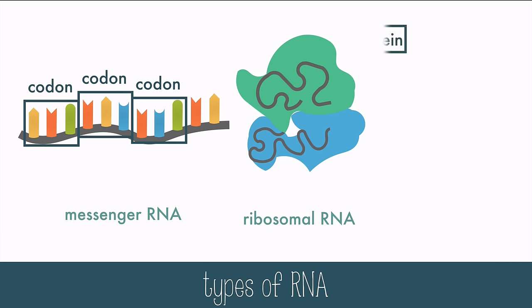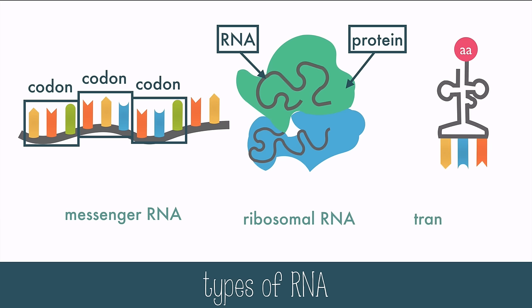The ribosomes are made of protein and RNA, and they are the protein-making machines that read the mRNA code and add the correct amino acid using tRNA. tRNA stands for transfer RNA, and its purpose is to transfer the right amino acid to the ribosome to build the protein. The tRNA has an anticodon on one end, which will match a specific codon on the mRNA, and has a specific amino acid on the other end. Together, these three parts will make translation happen.